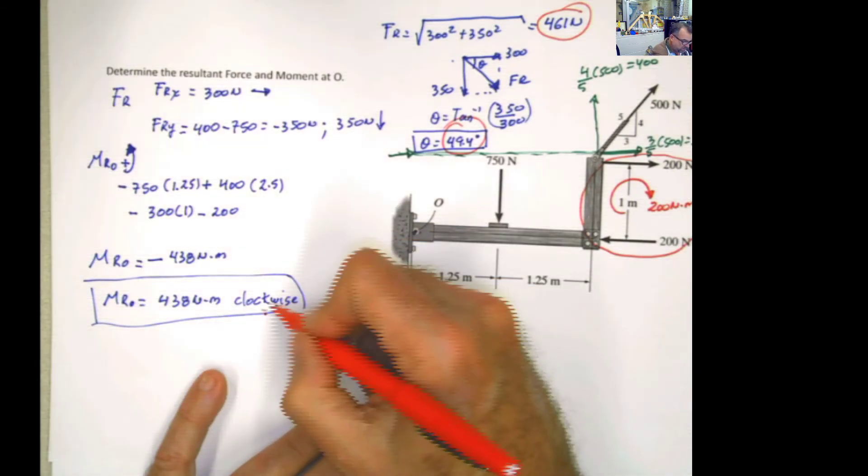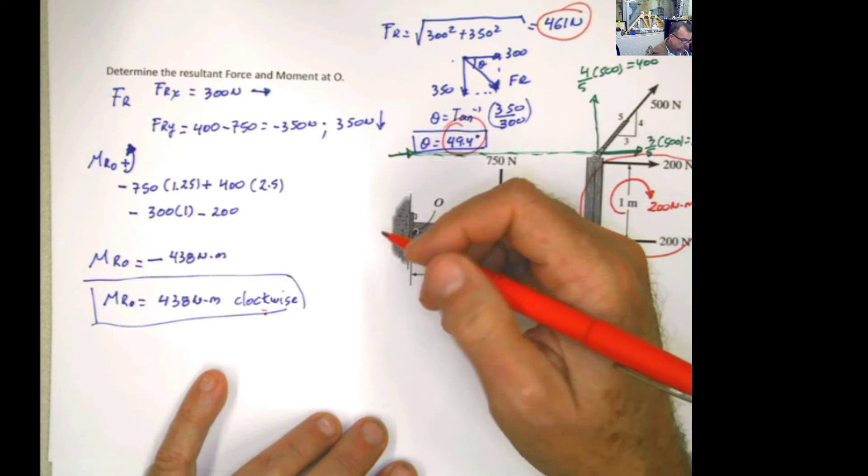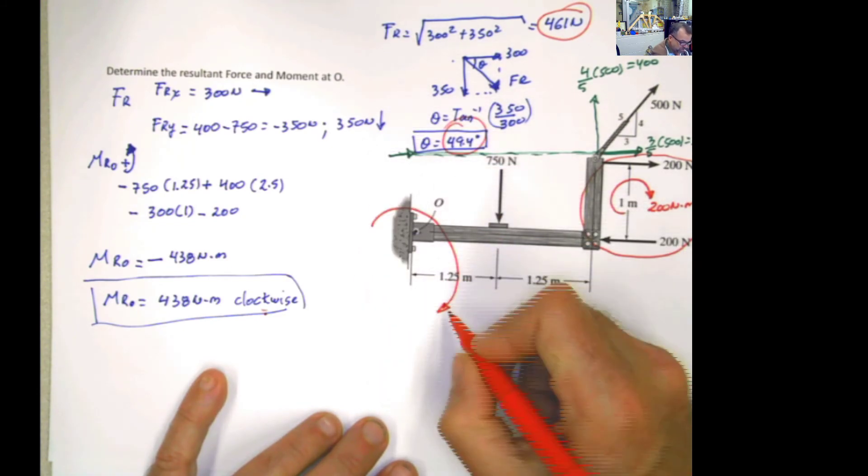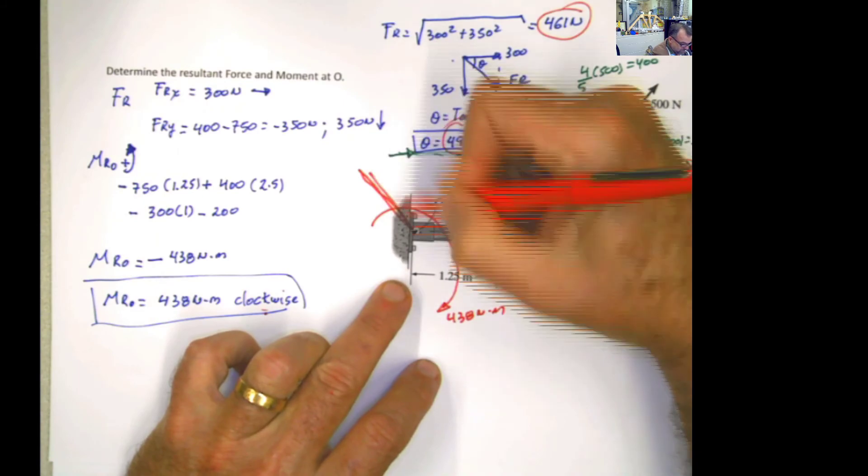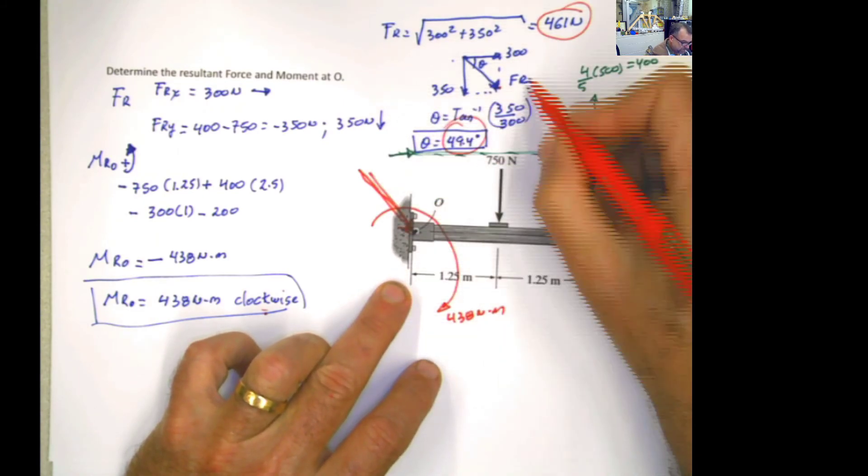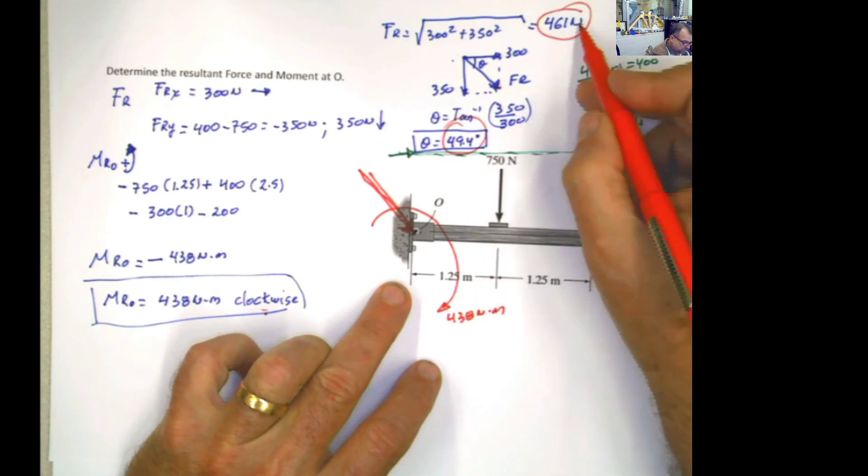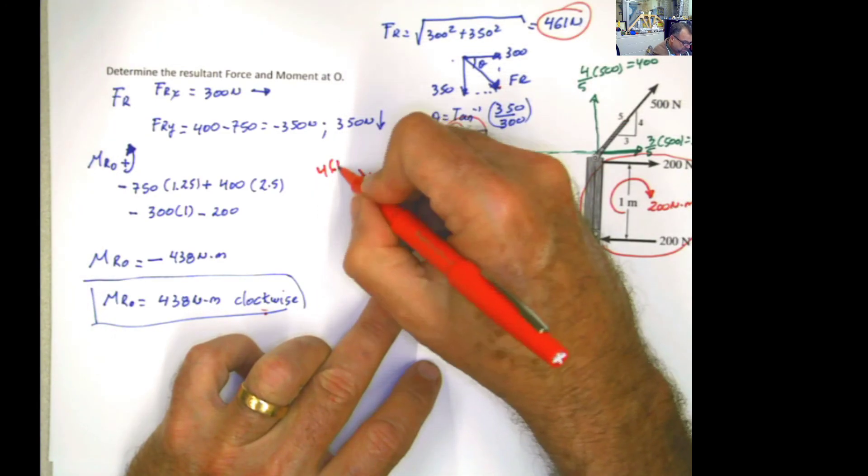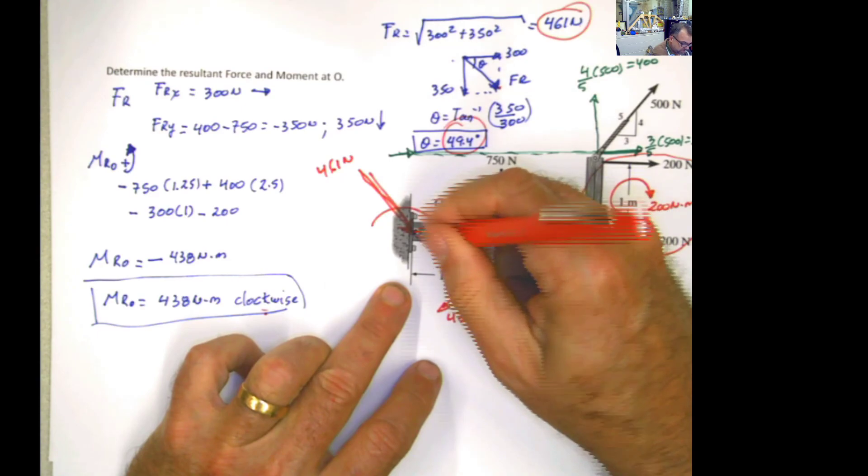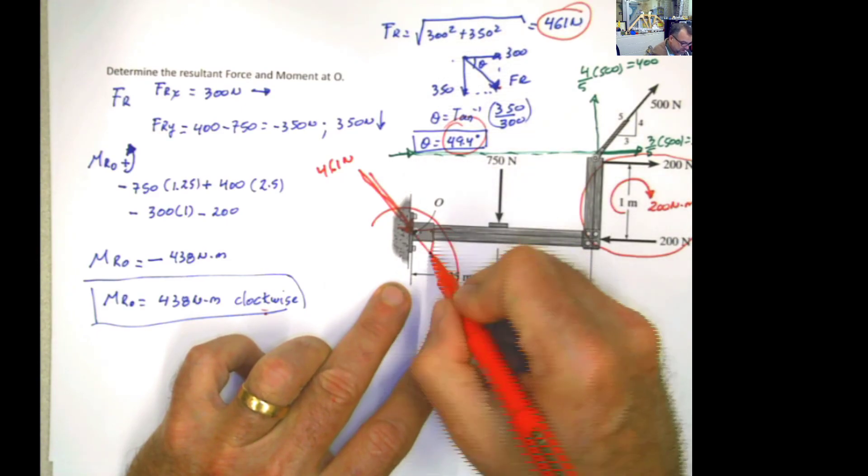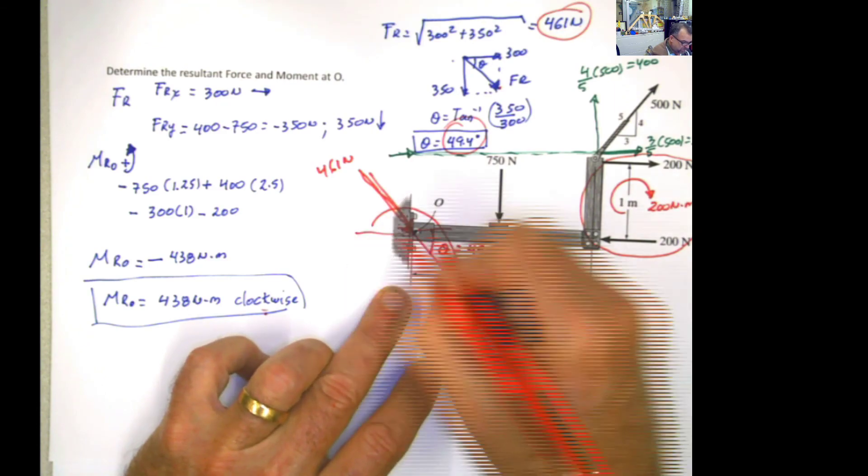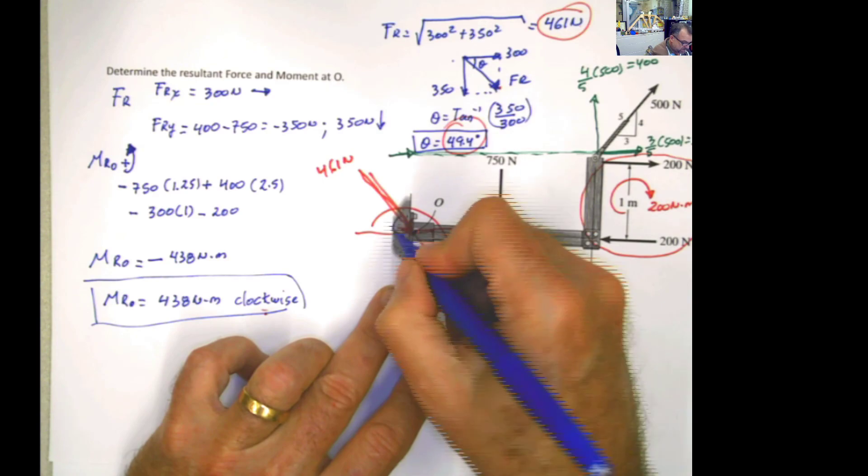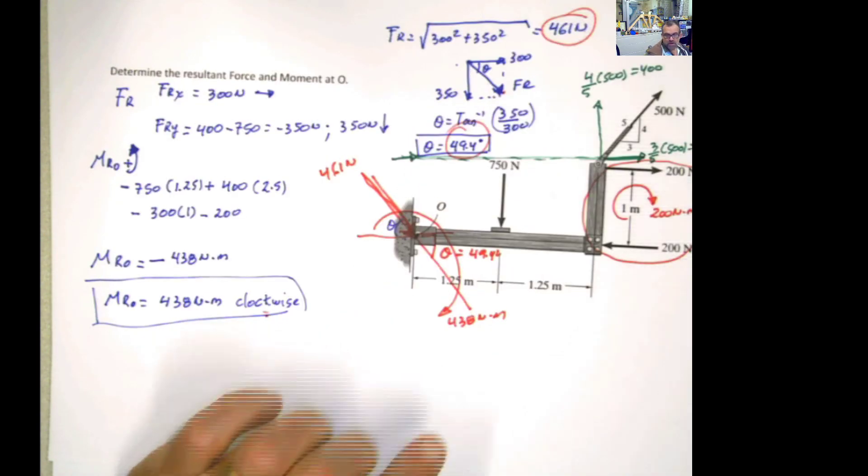What is the result of the problem, or the summary of the problem? Well, we need this moment acting clockwise, and the point O, 438 newton meter. And we have this force, this force is 461 newton. And the angle that we determined was this angle, 49.4 degrees. Which, if you realize, that angle is the same angle as this one. Well, that's all for this problem.